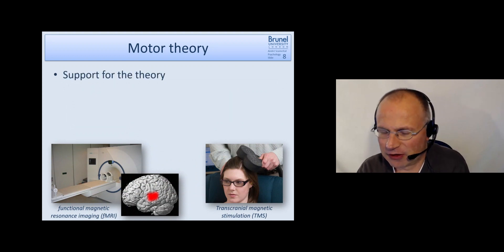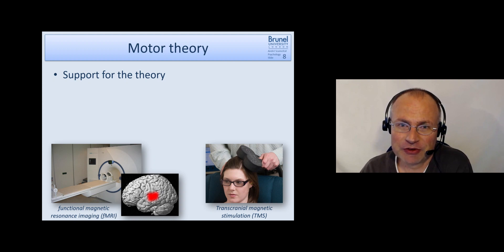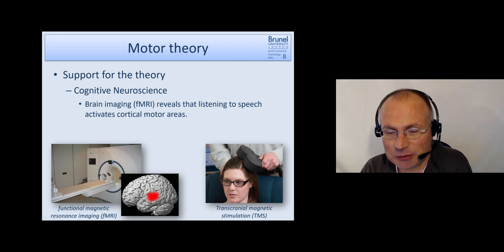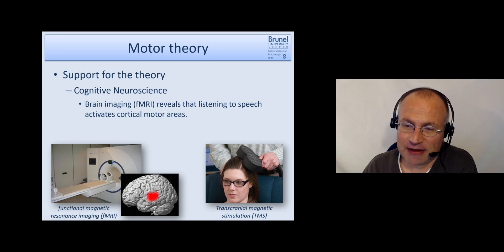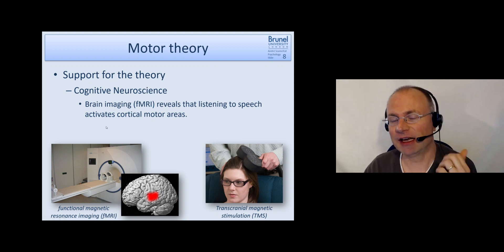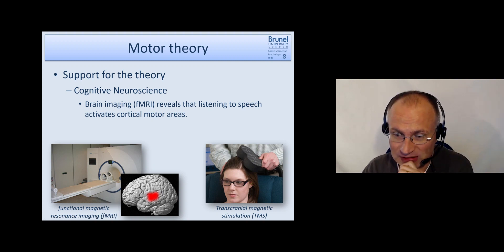There is further support for the motor theory of speech perception and that comes from the area of cognitive neuroscience. From two lines of research, one is functional magnetic resonance imaging and when participants go into such a brain imaging scanner and they just listen to speech without the need to produce speech. So just a passive listening task. We can see that it activates cortical motor areas. Just for clarification this image is just for illustration and this activation is actually acoustic perception. Motor area would be here.